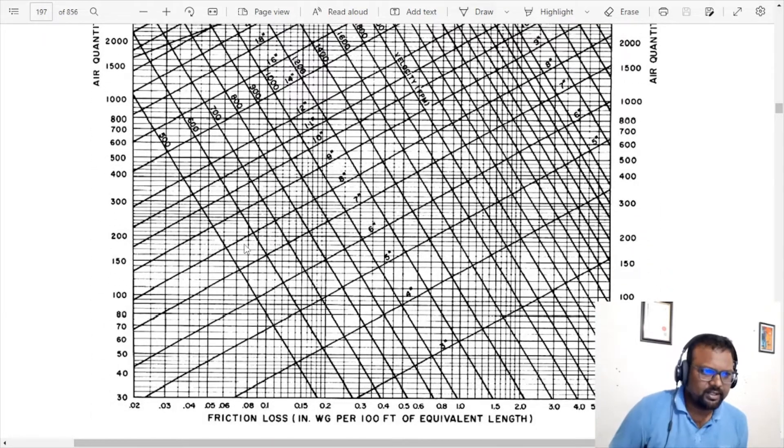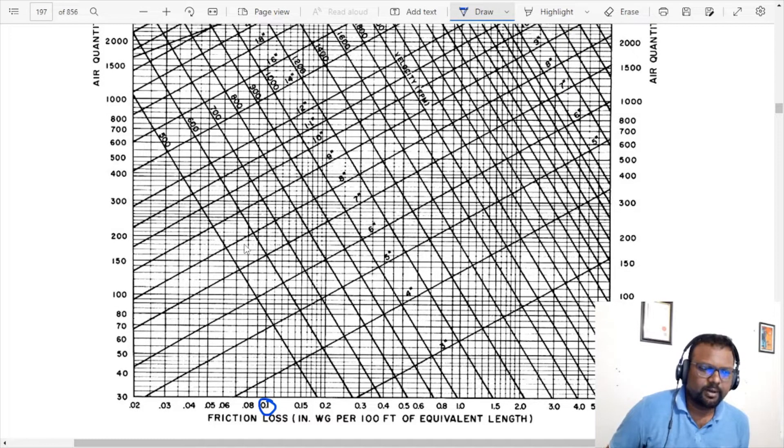Let's say that we have the equal friction method, which is 0.1 inch per 100 feet. Using the equal friction method, we need to calculate the CFM. Let's say I have a CFM. In that case, we calculate for a horizontal line and vertical line using the equal friction method.